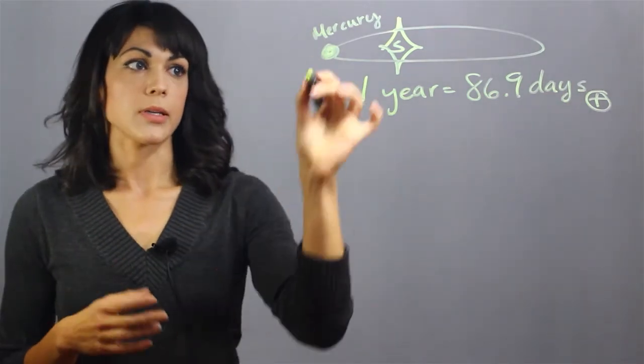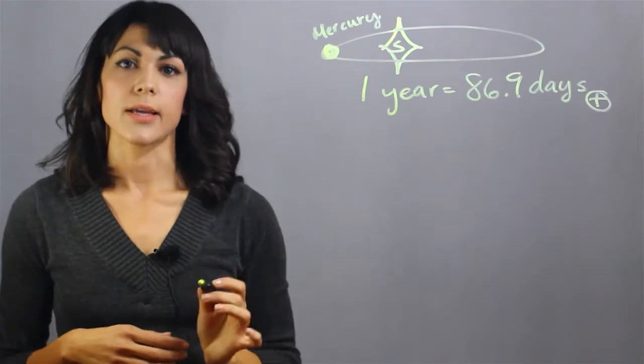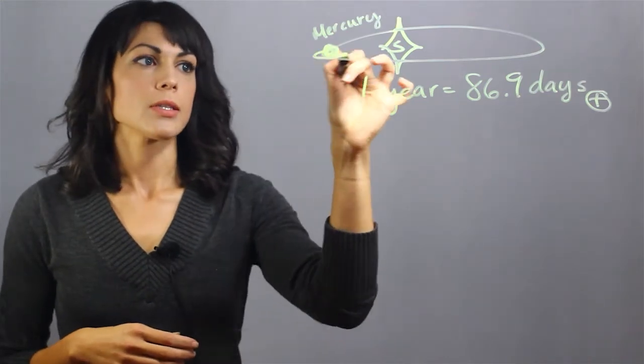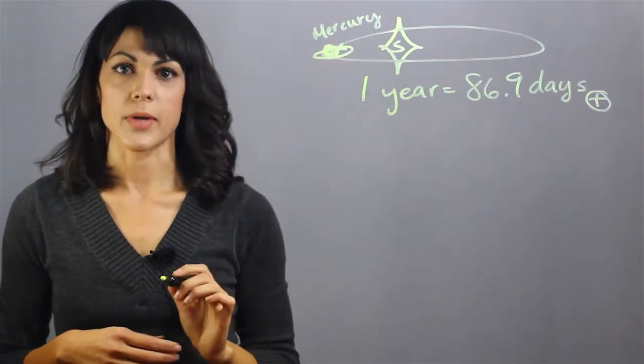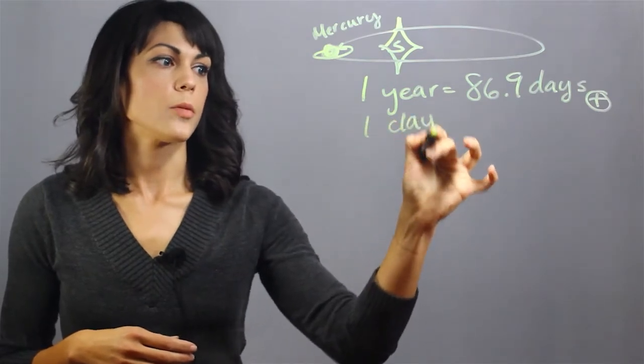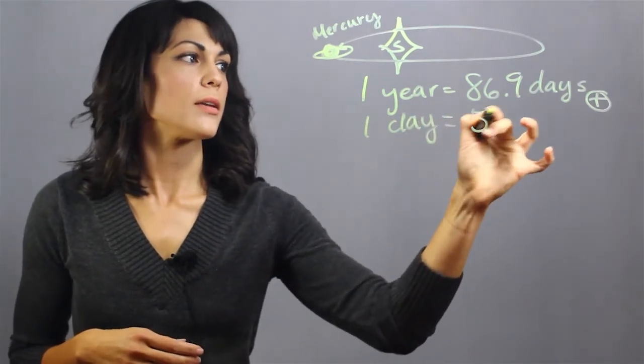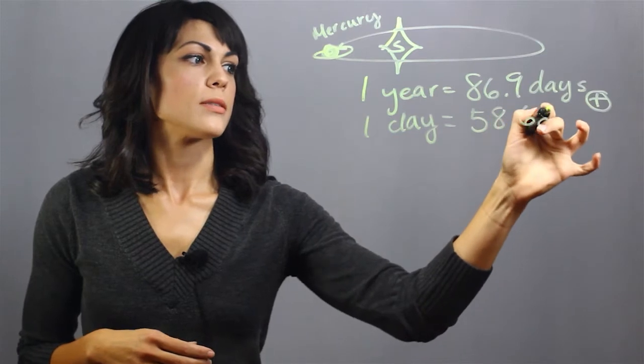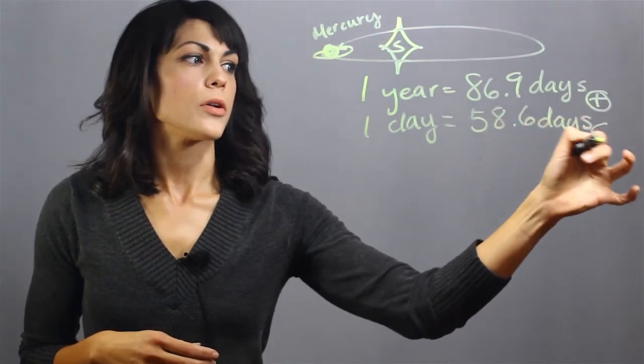The other thing we need is how long is a day on Mercury. This is how long it takes to go around its own axis. One day on Mercury is equal to 58.6 days on Earth.